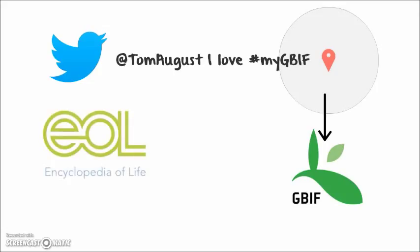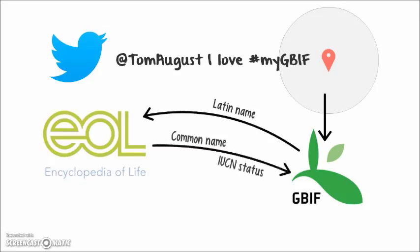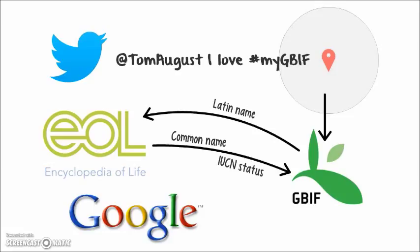The problem is GBIF gives me Latin names, so I have to lean on the Encyclopedia of Life using its APIs. I send the Latin names over to the Encyclopedia of Life and I get back common names. I can also get the IUCN's threat status of each species — some really cool information. To display some of this information I'm going to need maps too, so I go to another API, this time Google, and pull in their maps. Now I've got all this data together in one place.